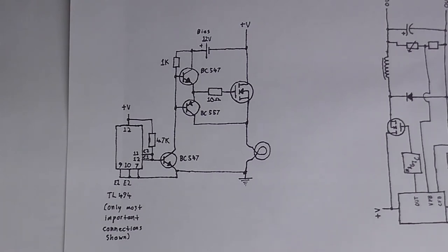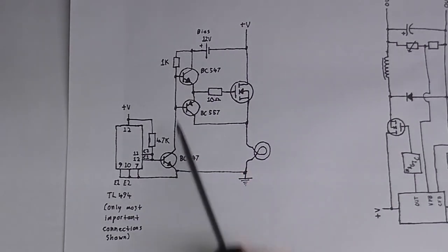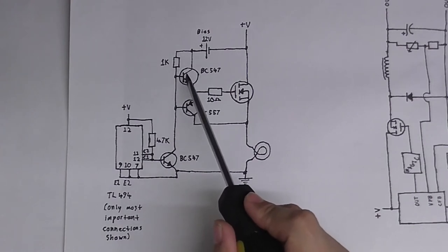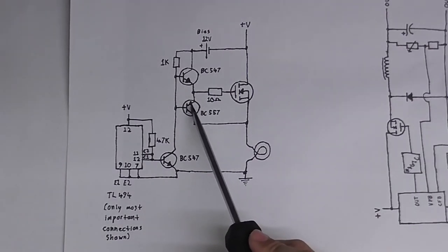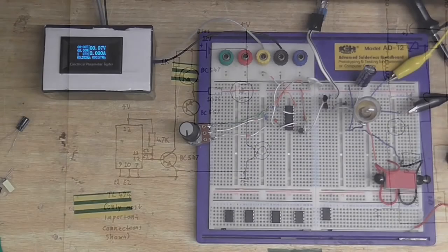Now, when the 494 is in its zero state, then this base can get pulled up by this resistor here. So, this transistor turns on. So, all this voltage here gets shunted to ground. So, this NPN turns off, this PNP turns on instead, and the MOSFET can discharge through it.